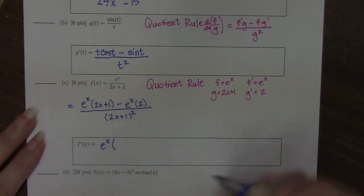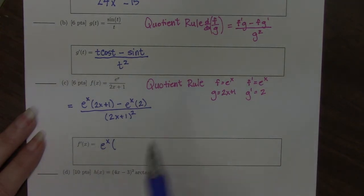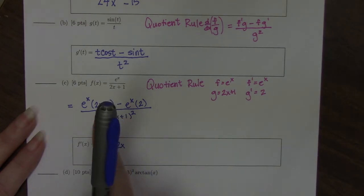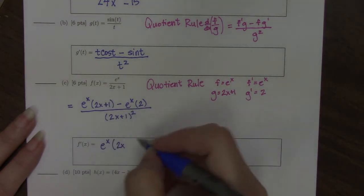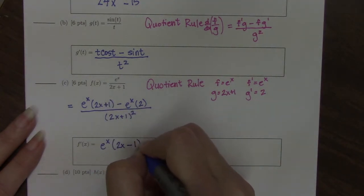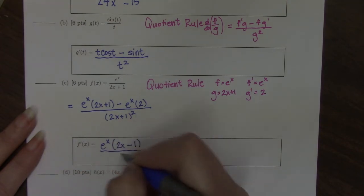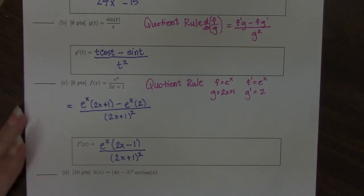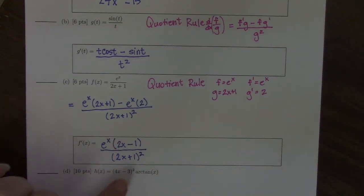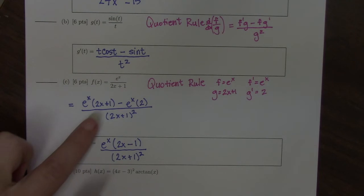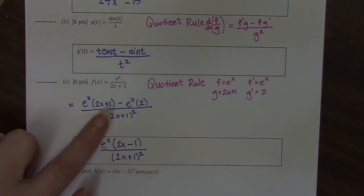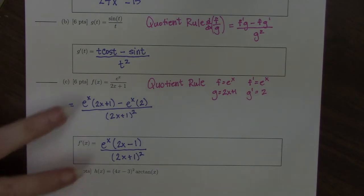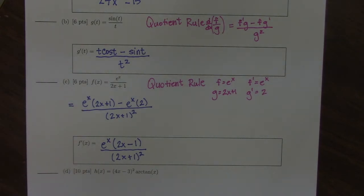If you want to take it one more step and factor your e to the x out front, you can. If I pull the e to the x out of the numerator, it leaves me with 2x plus 1 minus 2, and 1 minus 2 is minus 1, all over 2x plus 1 squared. These terms will not cancel because this is a plus 1 and this is a minus 1. We also could absolutely not cancel the 2x plus 1 here — that would not be allowed. But either of these answers would be sufficient for the exam.